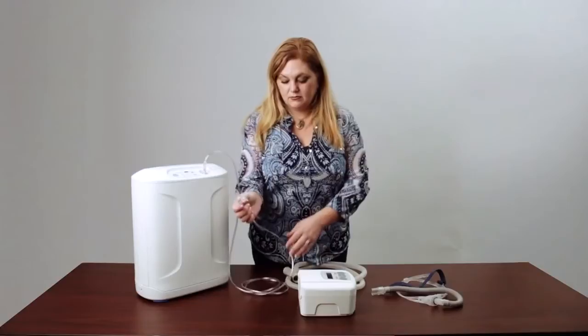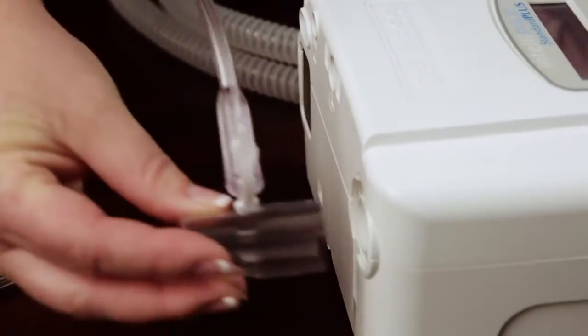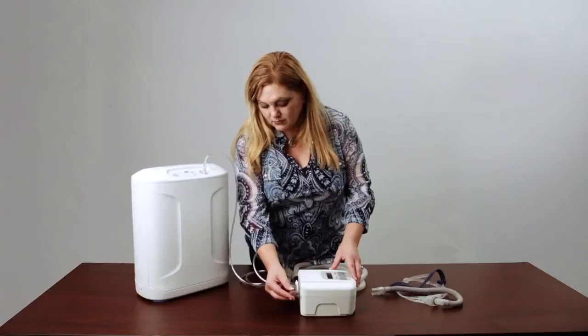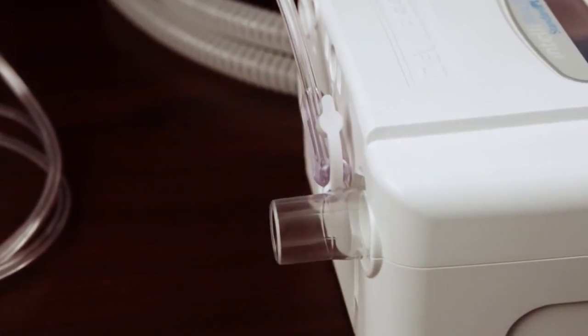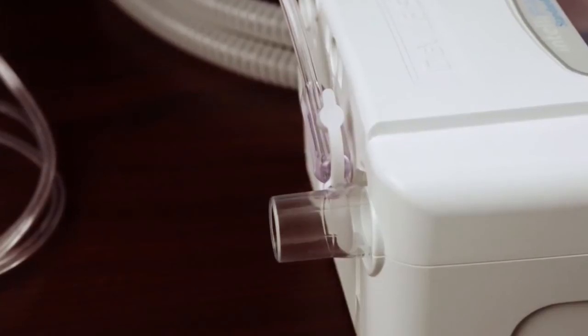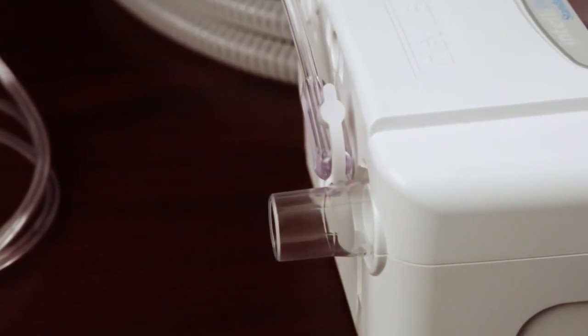Connect the oxygen bleed-in adapter with the oxygen tubing attached to the air pressure outlet on the CPAP machine. The large opening on the adapter will fit directly onto the CPAP machine.